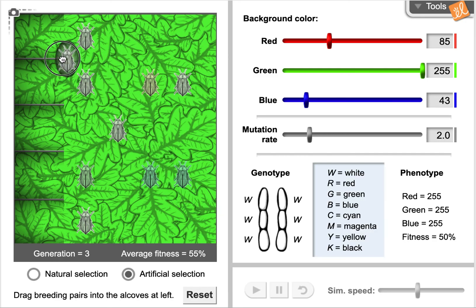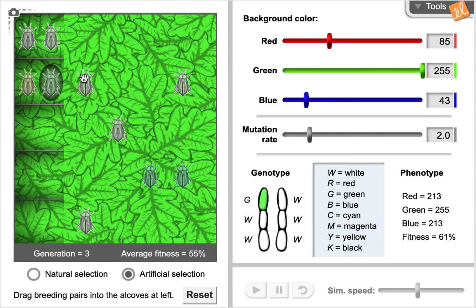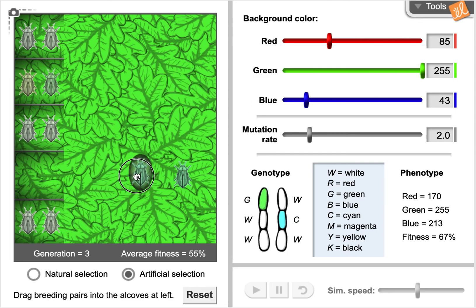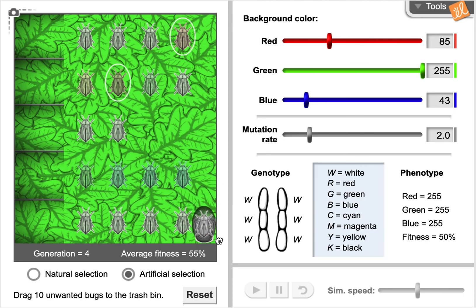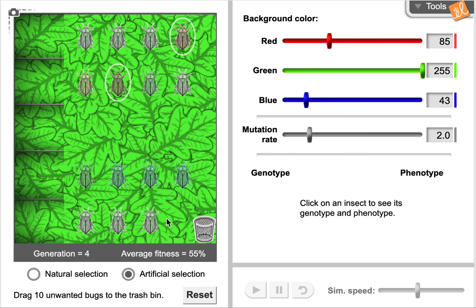I am just tediously getting rid of all the white insects that I can. And here's what I mean by picking who gets to breed together. I want to pick these two to go together to try and get something sort of greenish-bluish. You'll notice now that the offspring that I get from that pairing have a more distinctive color. This is going to take you some patience.